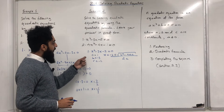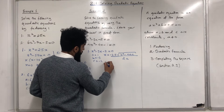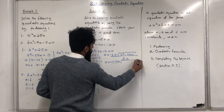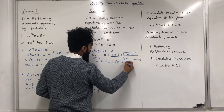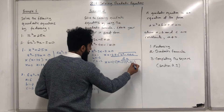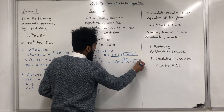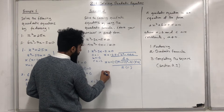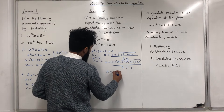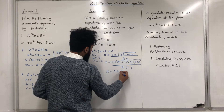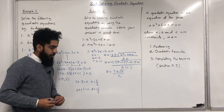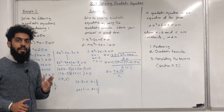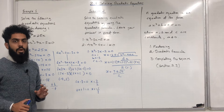Now we substitute our values for A, B and C into the quadratic formula. We get X = (-(-3) ± √((-3)² - 4(1)(-2))) / (2(1)). Simplifying gives X = (3 ± √17) / 2. So there are two solutions: X = (3 + √17) / 2 and X = (3 - √17) / 2.